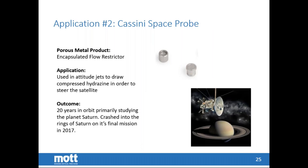Mott was on the Cassini space probe — one of several applications Mott has successfully developed for space programs. The encapsulated flow restrictors shown were used in attitude jets to draw compressed hydrazine gas in order to steer the satellite at the right angles and directions while in space. This is similar in concept to ion propulsion systems controlling xenon gas flow, though a slightly different application.